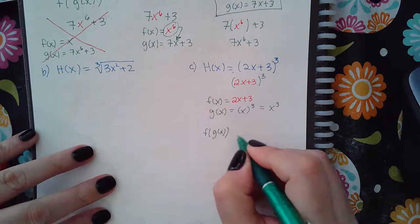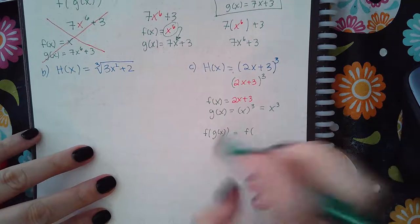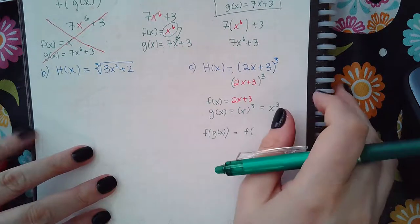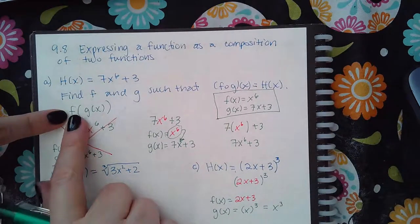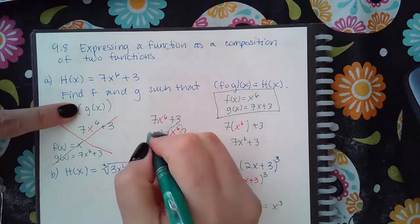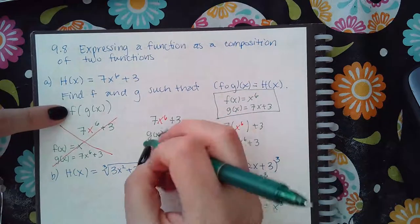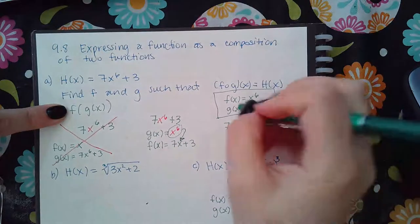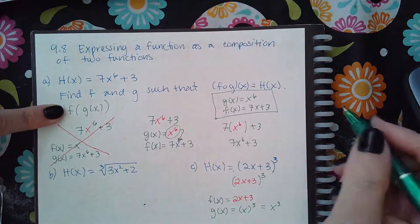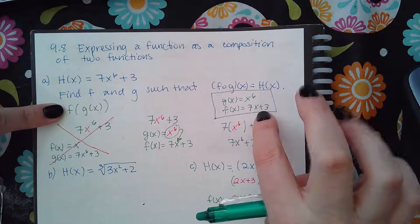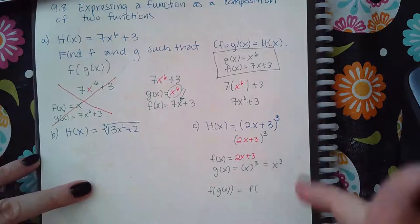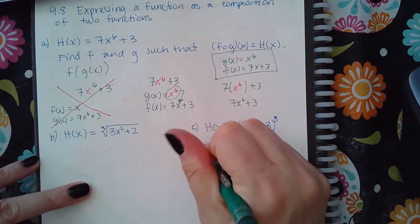Actually, I did those backwards. When labeling, the inside function needs to be labeled g and the outside function needs to be labeled f. So I did those two assignments in reverse. The inside function is g and the outside function is f — that's important and I'll address it further.